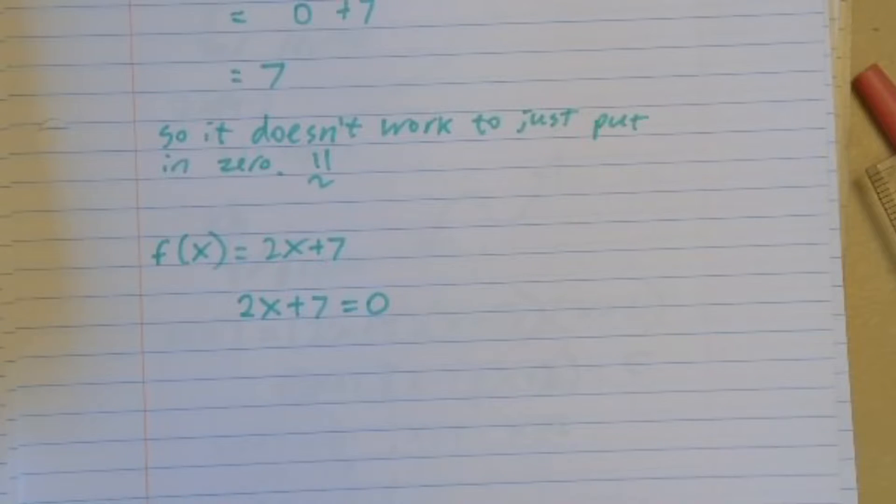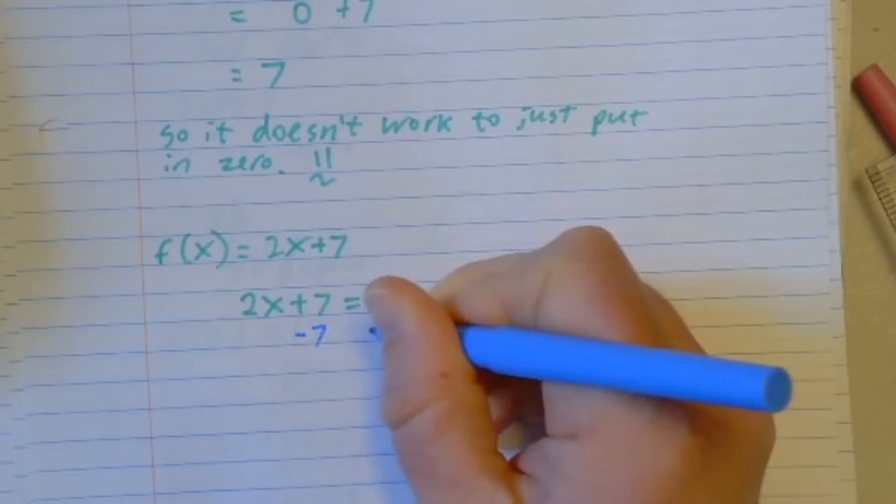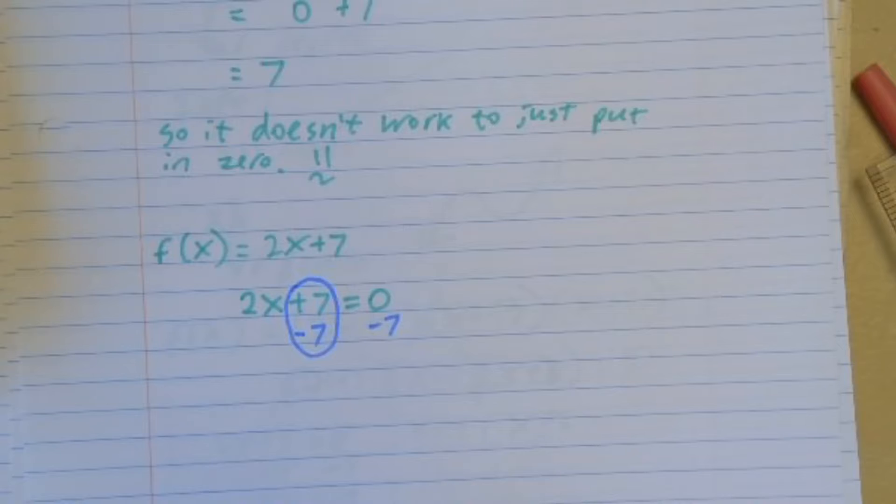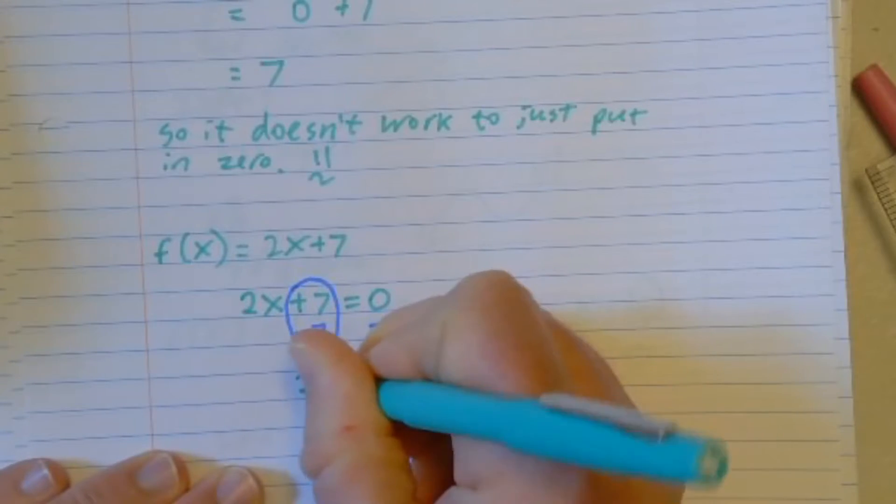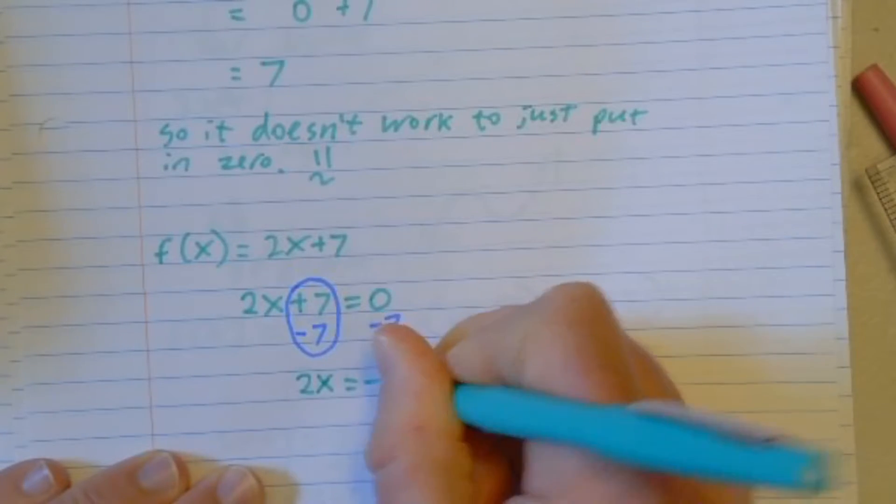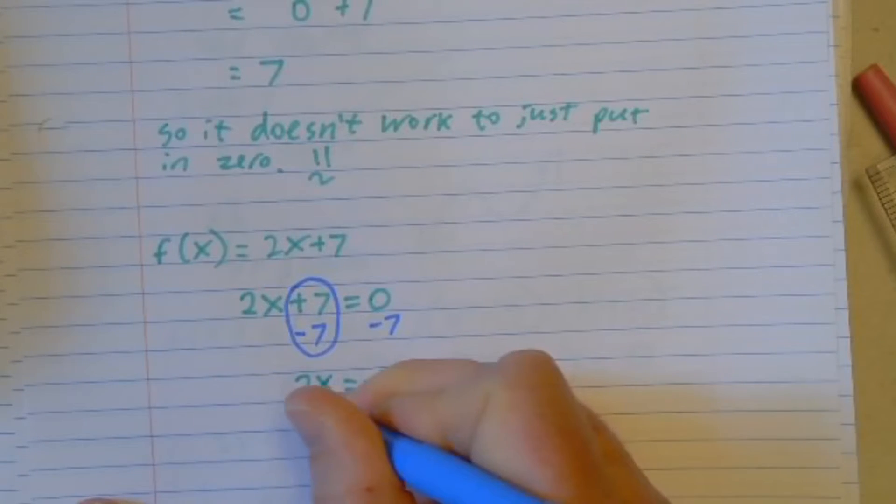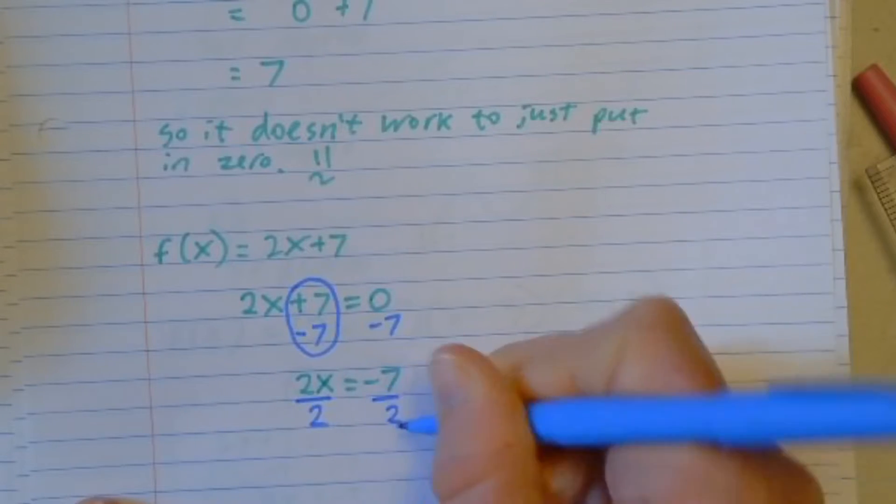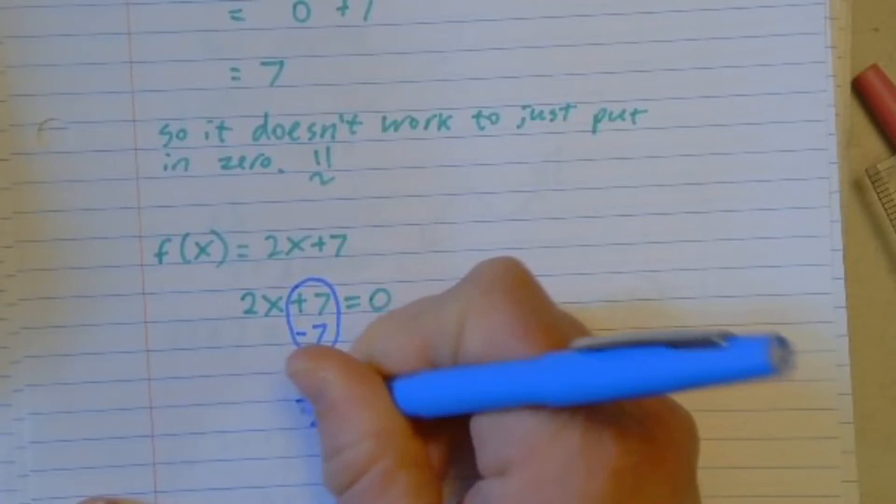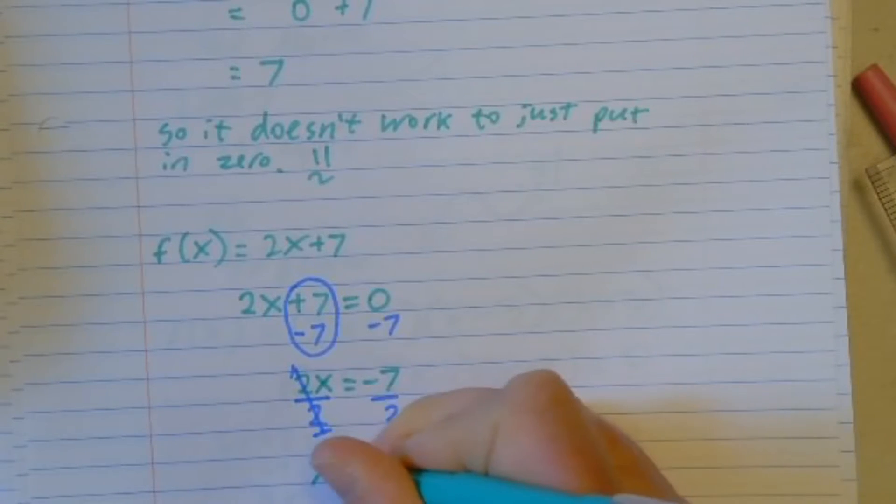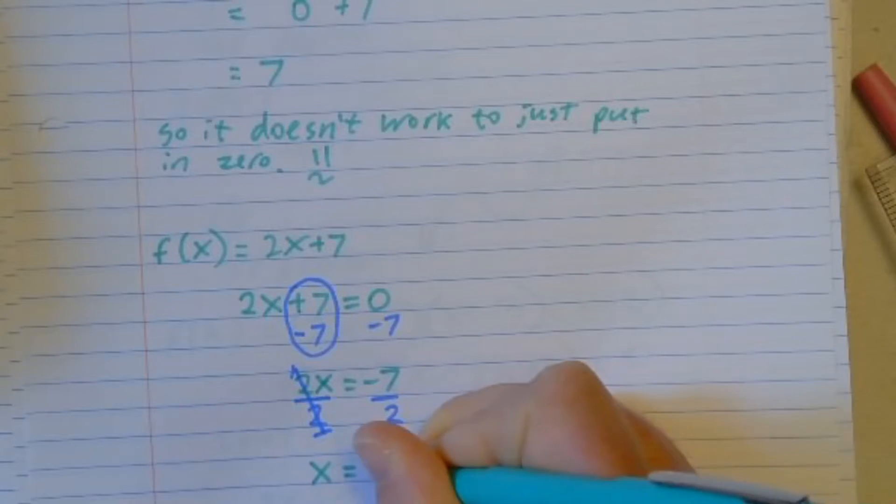So I can go through and I can use some different algebra moves. If I subtract 7 from both sides, that makes a 0 pair here. Then I'd have 2x is equal to negative 7. I need to know what just 1x is. So I'm going to divide both sides by 2. 2 divided by 2 is 1. So I get that x is equal to negative 7 halves.